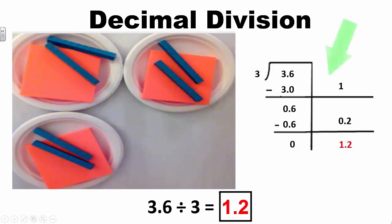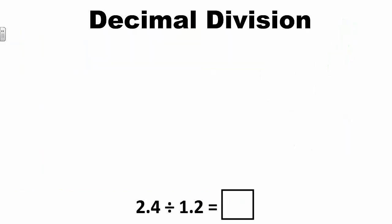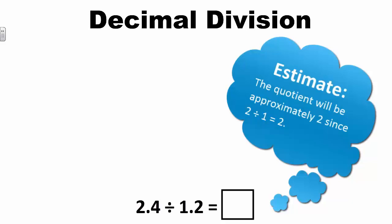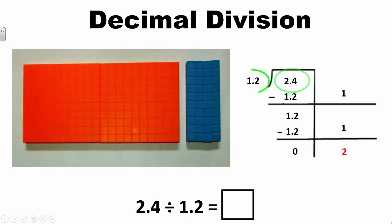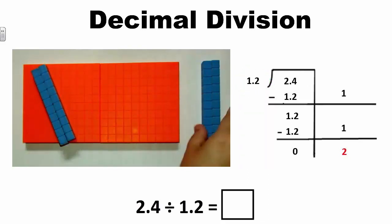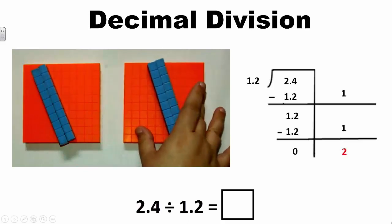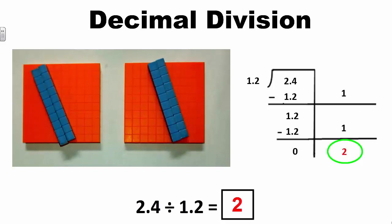Students can also use their knowledge of partial quotients to solve the problem, as shown on the screen. Now let's look at an example of measurement division, where students determine the number of groups. In this problem, 2 and 4 tenths divided by 1 and 2 tenths, I need to determine the number of groups to find the quotient. My dividend indicates I have 2 and 4 tenths total blocks to disperse, and my divisor indicates there are 1 and 2 tenths in each group. After placing 1 and 2 tenths in each group, I can see that there are 2 groups. Therefore, the quotient of 2 and 4 tenths divided by 1 and 2 tenths is 2. An example of partial quotients with this problem is also included on the screen.